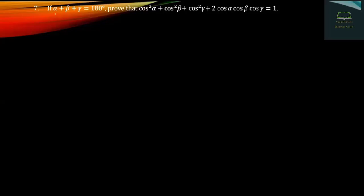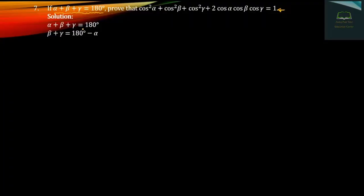Question number 7: If α + β + γ = 180 degrees, prove that cos²α + cos²β + cos²γ + 2·cosα·cosβ·cosγ = 1.